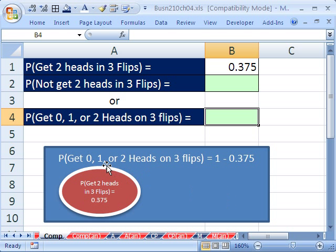That is called the complement. So anytime we want to calculate the complement, which would be not get two heads in three flips or get 0, 1, 2 heads in three flips, we simply take 1 minus whatever the probability of that event is. So the complement rule, very convenient, 1 minus that. And we have all the rest.